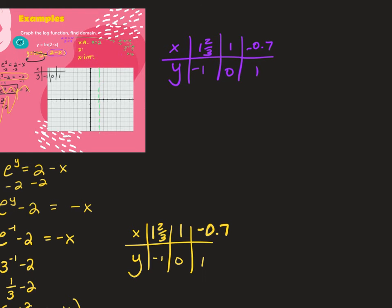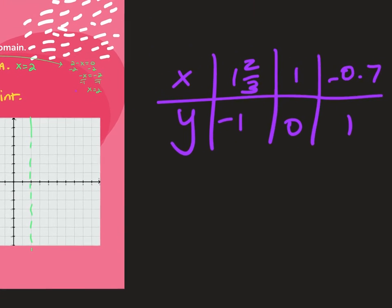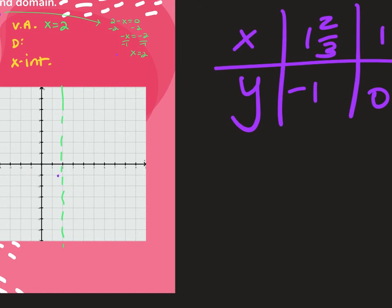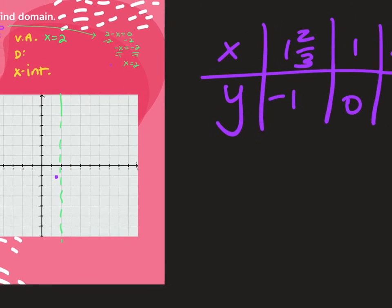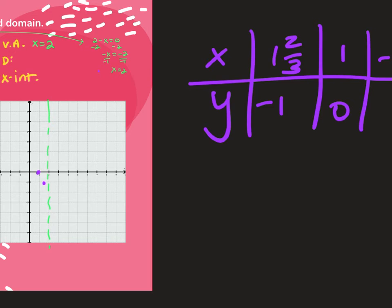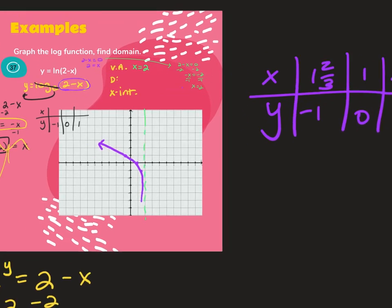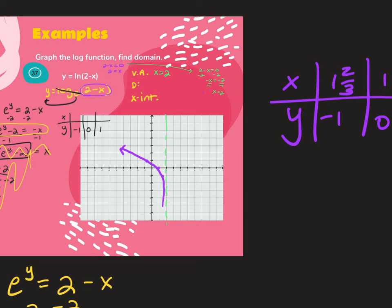Now I'm plotting these points: approximately (1 and 2/3, -1), (1, 0), and (-0.7, 1). This is going back the other direction, which makes sense because the expression has 2 minus x — a negative x — so it's inverted, reflecting over the y-axis.